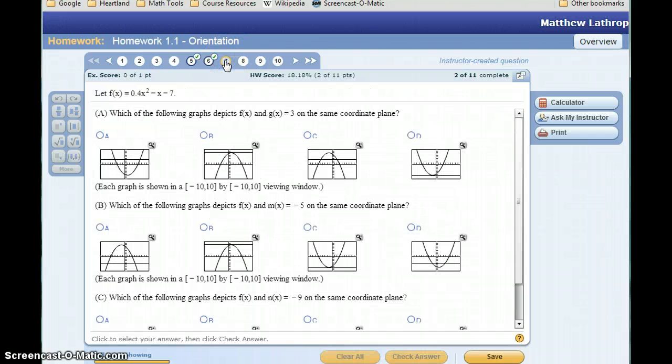We'll briefly look at one last example here. In this case we're given a function 0.4x squared minus x minus 7, and we want to select the graph that depicts that intersecting with a second function g of x equals 3.